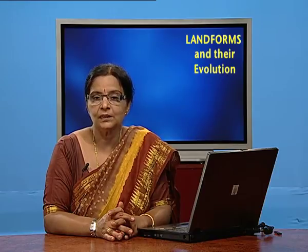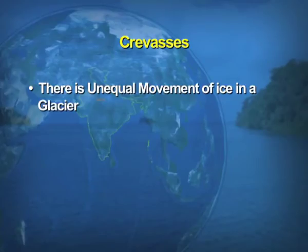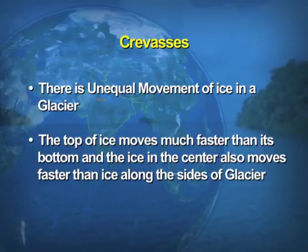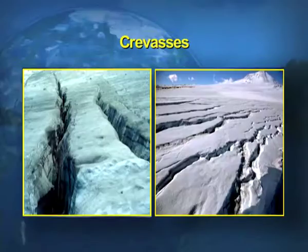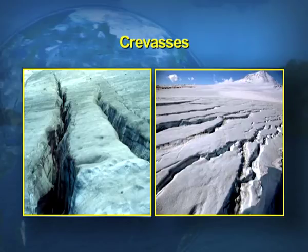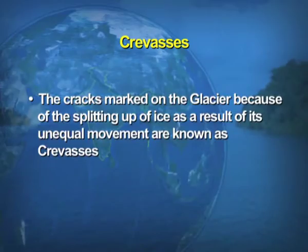First, we take up crevasses. There is unequal movement of ice in a glacier. The top of ice moves much faster than its bottom, and the ice in the center also moves faster than the ice along the sides of the glacier. On the screens, you can see a visual of crevasses — deep gullies formed when the ice moves loaded with different sizes of pebbles and rock material. These cracks are marked on the glacier because of the splitting up of ice as a result of its unequal movement.